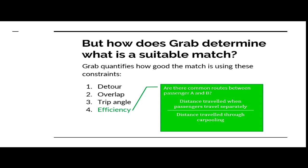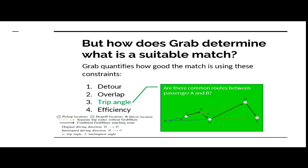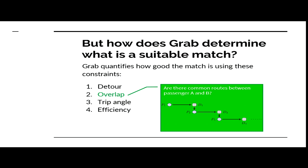The base index is one, which represents the worst case scenario where there is no overlap, as shown in this diagram. Therefore, the efficiency index is one. If the efficiency index gets higher, it will be a more preferred match for GrabShare.